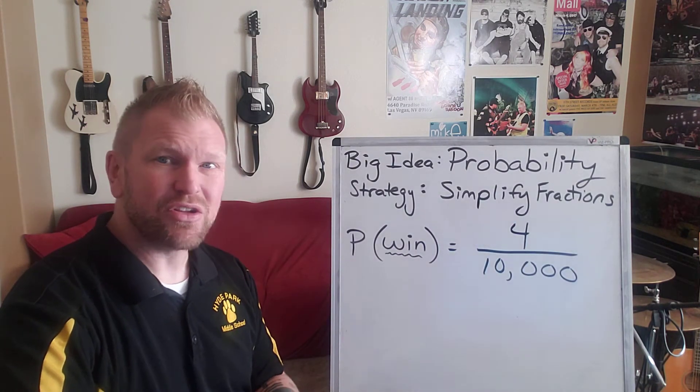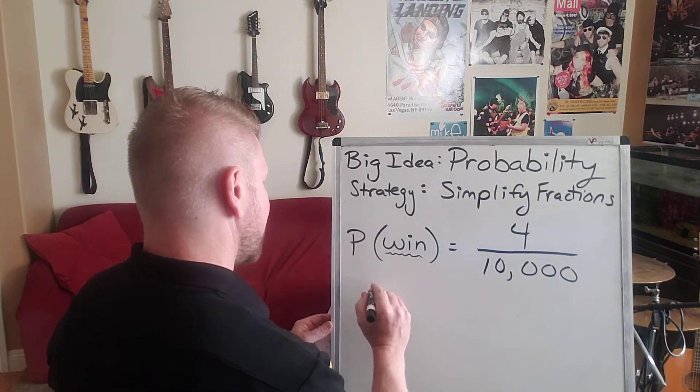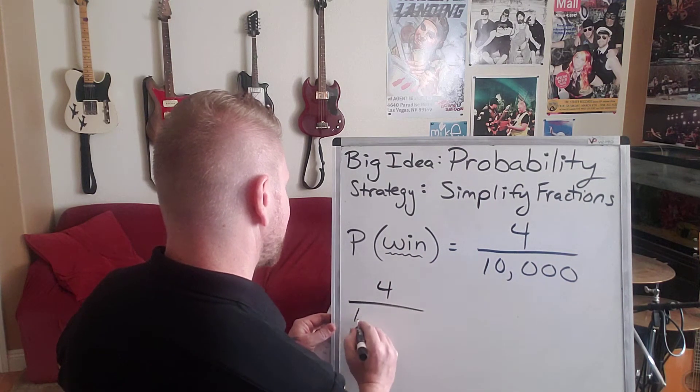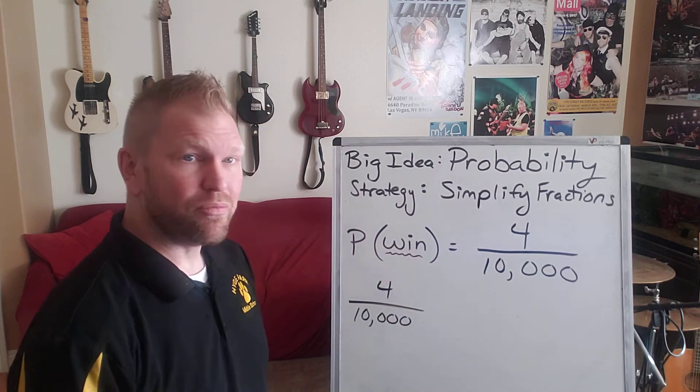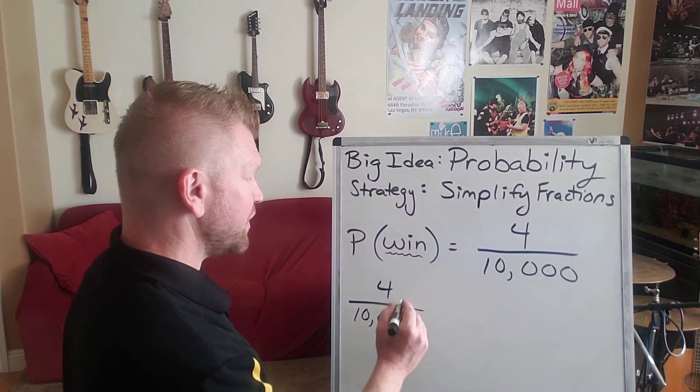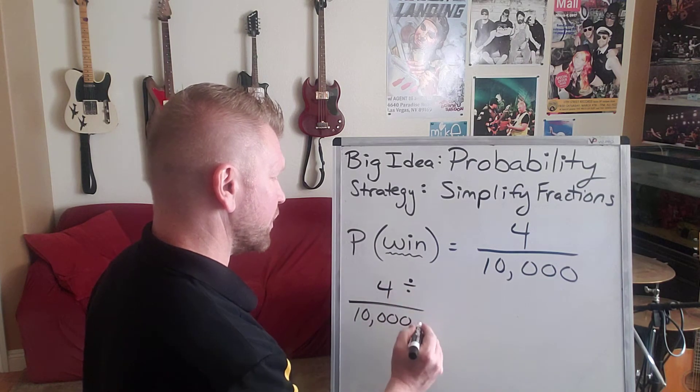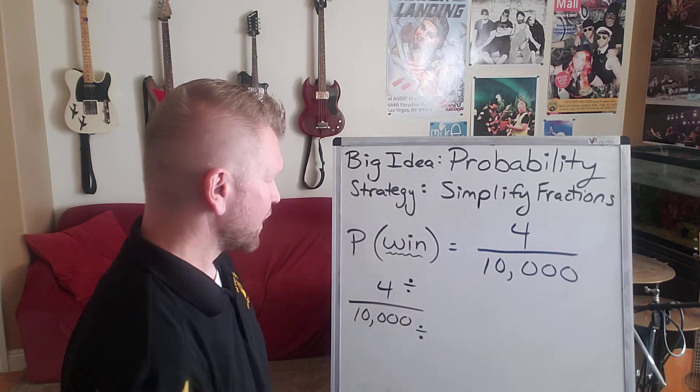Now, to get to the right answer, we're going to have to simplify our fraction. So let's take our fraction 4/10,000. Okay, so how do we simplify this? Well, we were just talking about divisibility rules. We need to think of a number that's divisible into four that's also divisible into 10,000.